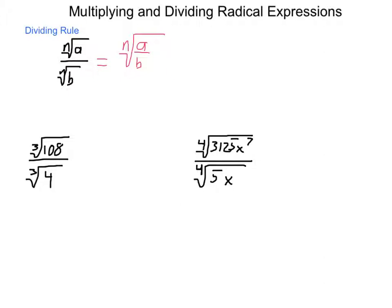For example, if we take the third root of 108 divided by the third root of 4, this is the third root of 108 fourths, which is 108 divided by 4, we get the third root of 27. 27 we can take a cubed root of, and we get simply 3.